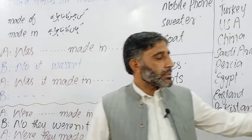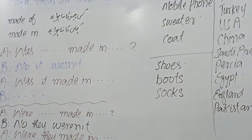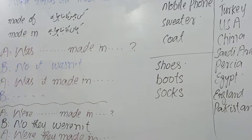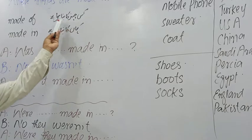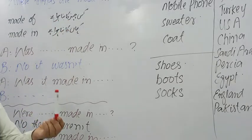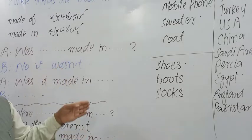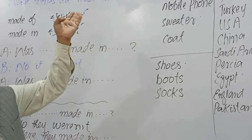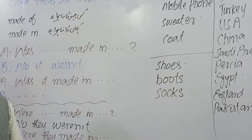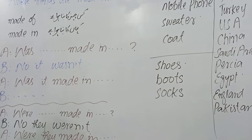To yehi haem discuss karenge. Dear viewers and listeners, yeh dho alfaz hain: made of aur made in. Hame ismein pehle farq karna chahiye. Made of ka matlab kiya hai? Kis chiz ka bana hua hai? For example, this marker is made of plastic. This whiteboard is made of formica. This wall is made of cement. So we can talk about made of — kis chiz ka bana hua hai.